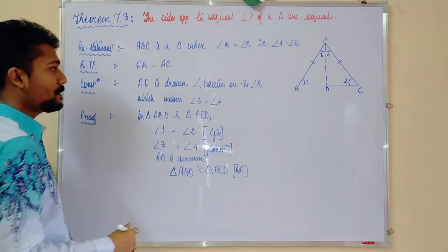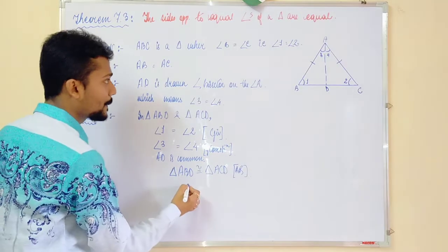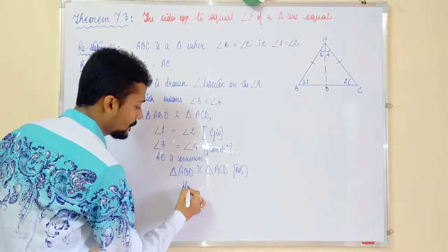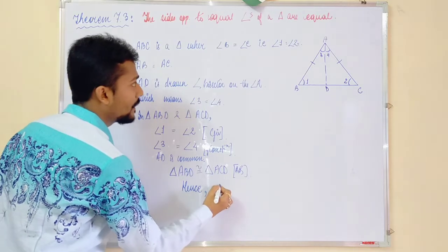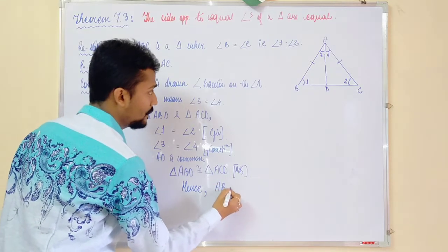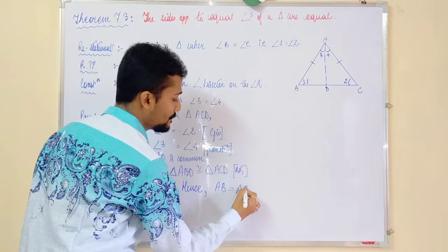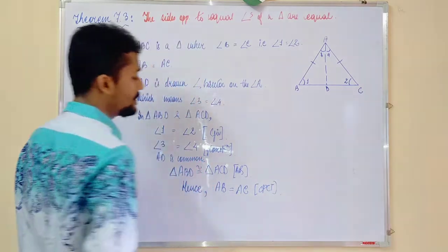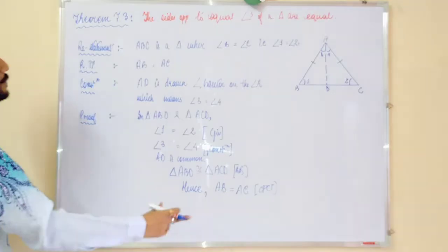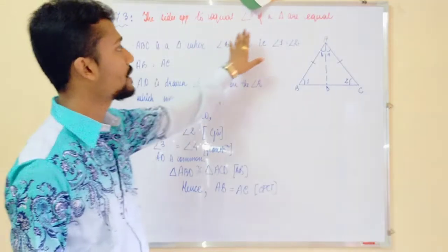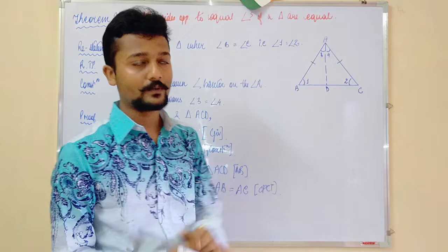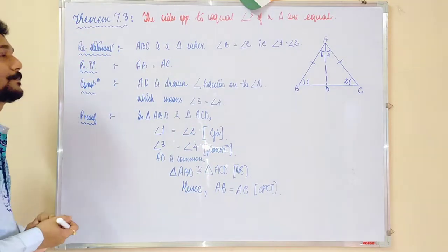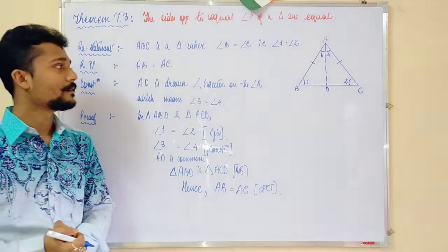So, with this what do we get? Hence, what we can say, AB is equal to AC. So, at the end what you will write, therefore, sides opposite to equal angles of a triangle are equal. Is that clear? Note the theorem.